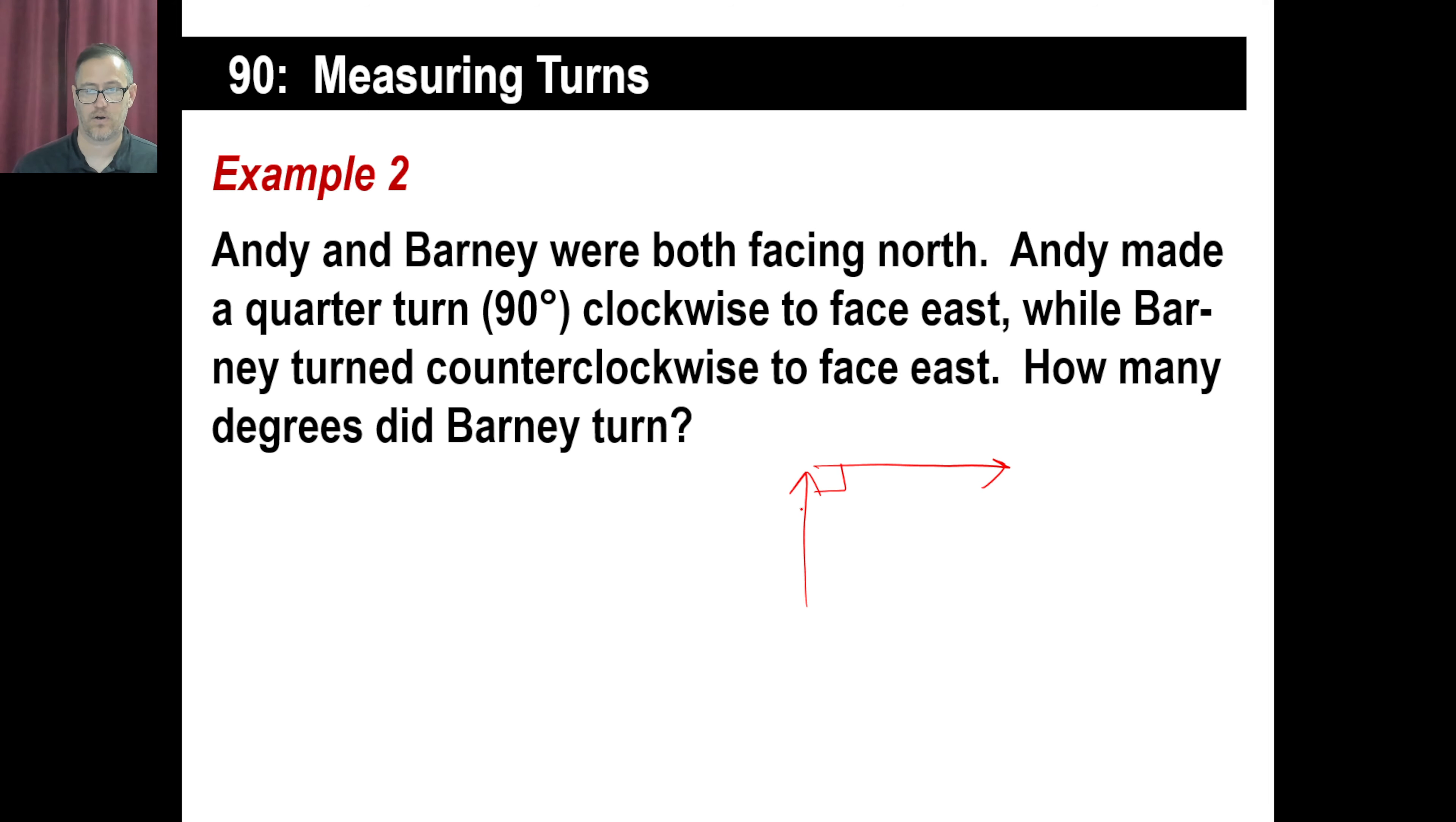Barney turned counterclockwise, so he went all the way in the other direction. He turned this way, then this way, then this way, then this way. Boom. Three times, that means he turned 90 degrees this way, 90 degrees this way, and 90 degrees that way. 90 plus 90 plus 90 is 270 degrees, right?